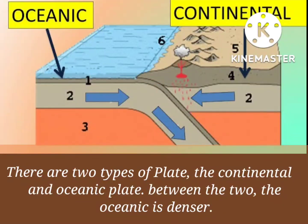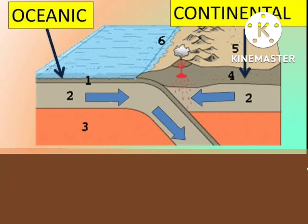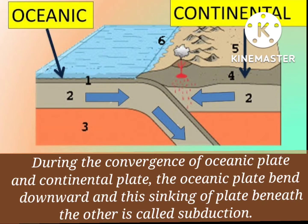There are two types of plates: the continental and oceanic plate. Between the two, the oceanic is denser. During the convergence of oceanic plate and continental plate, the oceanic plate bends downward, and this sinking of a plate beneath the other is called subduction.